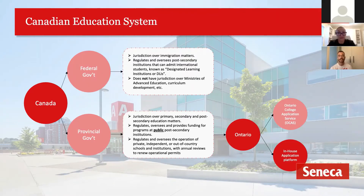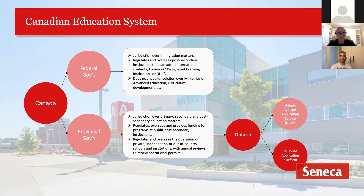The federal government directly impacts international students' ability to get a study permit, to work while they study, and eventually remain in Canada on the path towards permanent residence. The federal government also regulates which institutions — public or private — are able to admit international students. You'll hear me talk about Designated Learning Institutions, or DLIs, which is very important for international students to know.